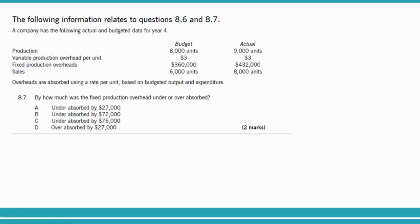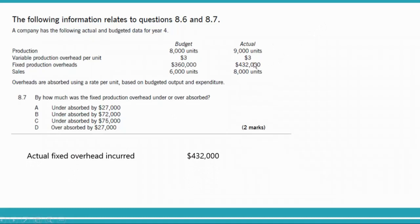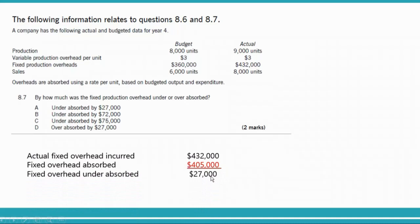Actual fixed overheads are $432,000. Absorbed overheads are $405,000 (calculated previously). The difference is $27,000. Now — is this under absorbed or over absorbed? The answer choices are under absorbed $27,000 or over absorbed $27,000.